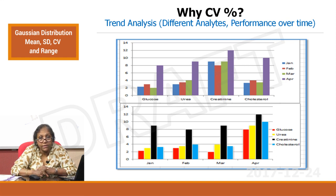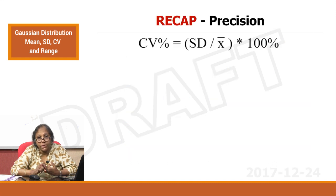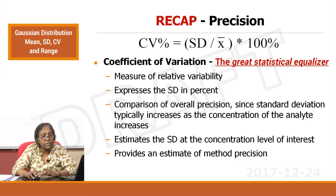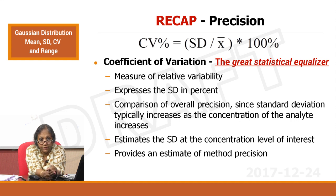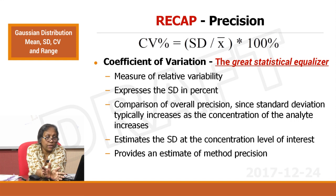We saw the formula for calculating standard deviation, and we now know how to calculate CV% by taking the SD, dividing by the mean, and multiplying by 100 — it is a measure of relative variability. We said we have to understand four parameters: track the mean, track the standard deviation, understand the CV for comparisons, and know how to set the limits of a control chart.